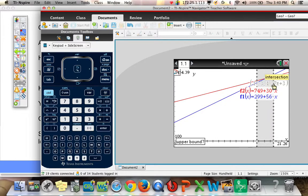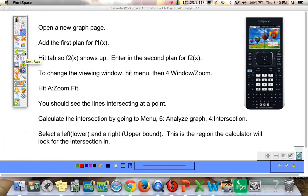I want to look within this area for the point of intersection. And it gives us that answer right there. 17.3 and 1.27E plus 3. So let's write that down and talk about what it means.